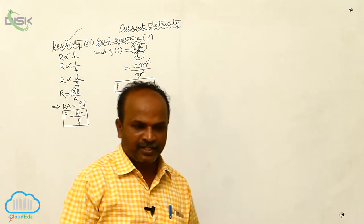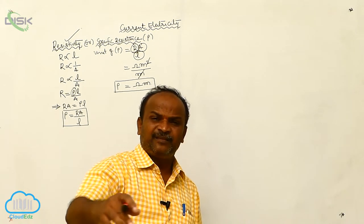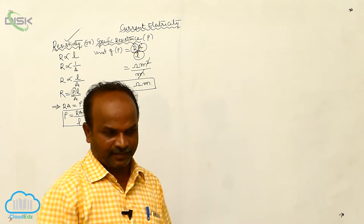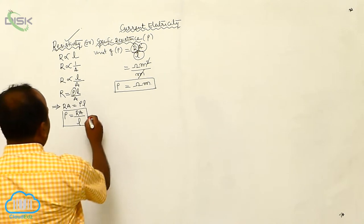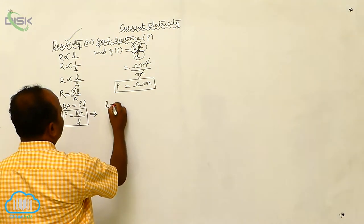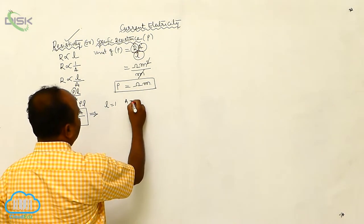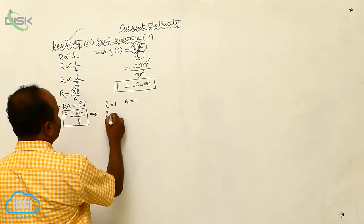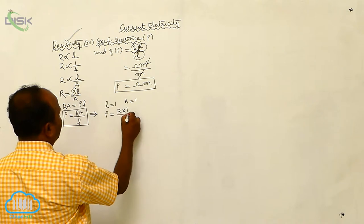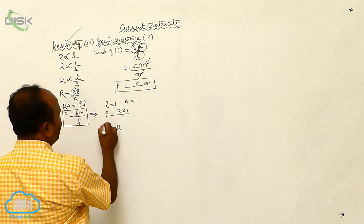What is the definition of resistivity, and what is the difference between resistivity and resistance? Suppose from this equation, if L equals 1 and A equals 1, then rho equals R times A divided by L equals R times 1 divided by 1. Therefore, rho equals R.